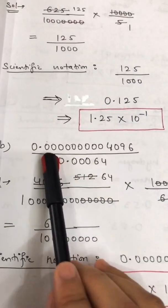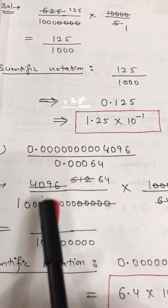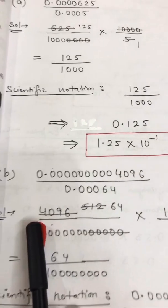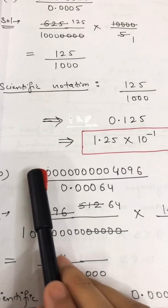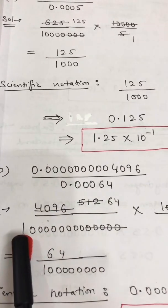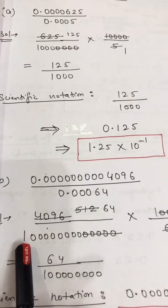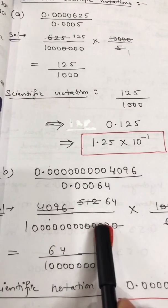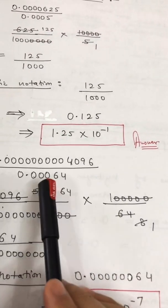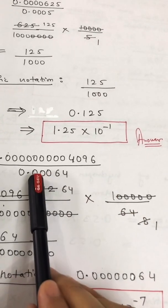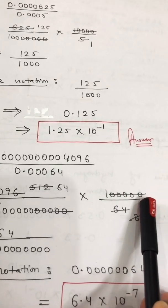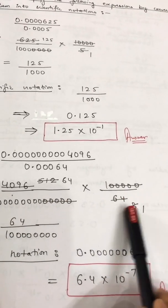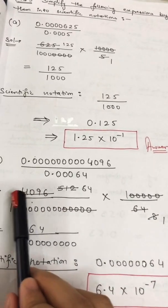Now part b. Again I write in the same manner. For the numerator write digits 4096, divided by — after the decimal count the digits and place that number of zeros. Come to the denominator: write 64, and that number of zeros goes in the numerator. Cancel the zeros — one, two, three, four, five zeros from numerator and denominator. Cancel on the eight table: 64 and 4096.